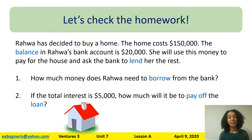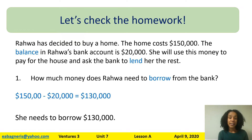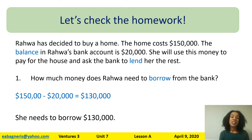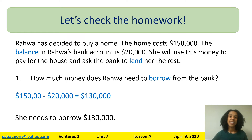The first question is: how much money does Rawa need to borrow from the bank? Rawa's home costs $150,000. She has $20,000 in the bank, and she is going to put all of that money toward buying the home. So $150,000 minus $20,000 equals $130,000. That is how much she still needs to pay for the home, so she will ask the bank to borrow $130,000.